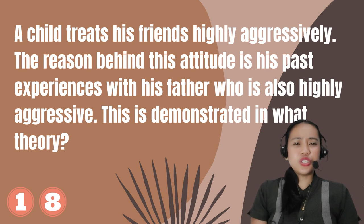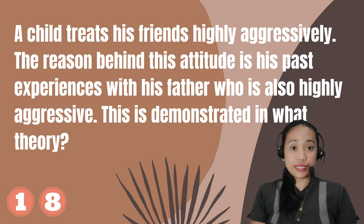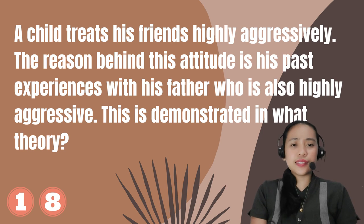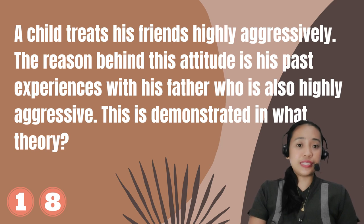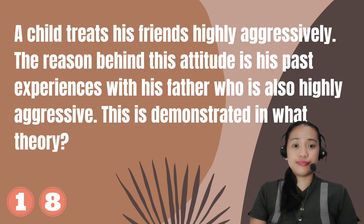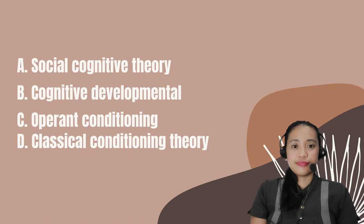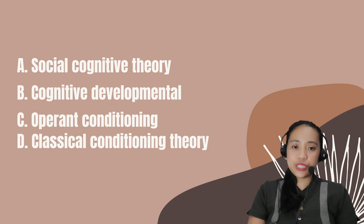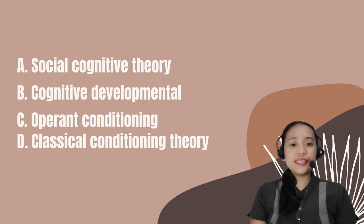Number 18. A child treats his friends with high aggression. The reason behind this attitude is his past experiences with his father, who is also highly aggressive. This is demonstrated in what theory? A. Social cognitive theory. B. Cognitive developmental theory. C. Operant conditioning. D. Classical conditioning theory.